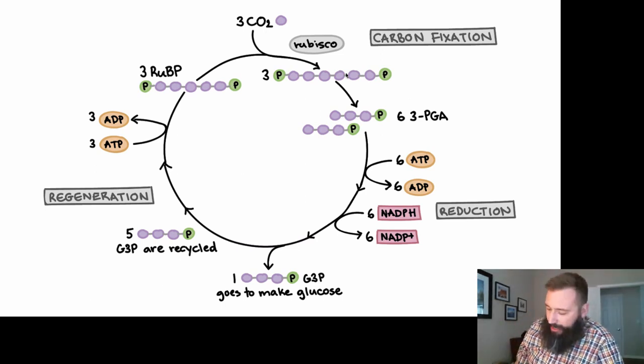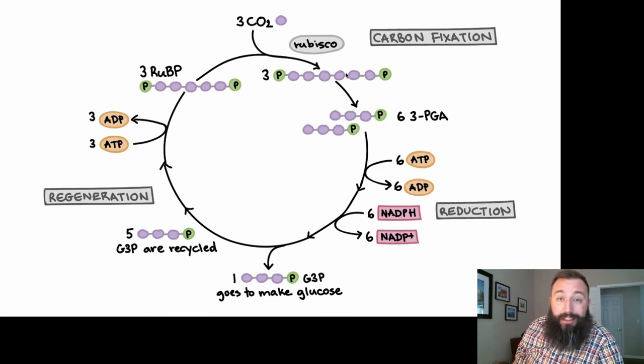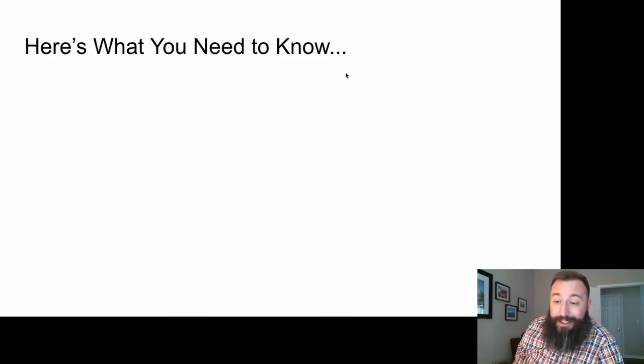Only one G3P molecule per turn of the cycle is used to create those organic compounds like sugars and cellulose. The rest are recycled and modified back into that five-carbon RuBP sugar, so Rubisco can add another carbon to it. The cycle goes on and on — and it's been doing this for 2 billion years.